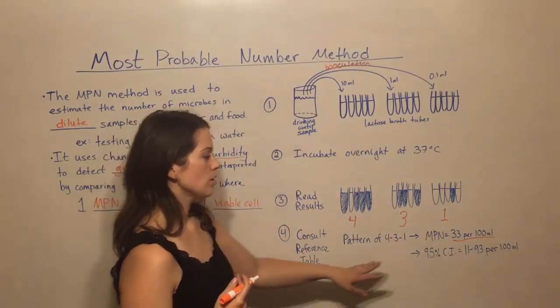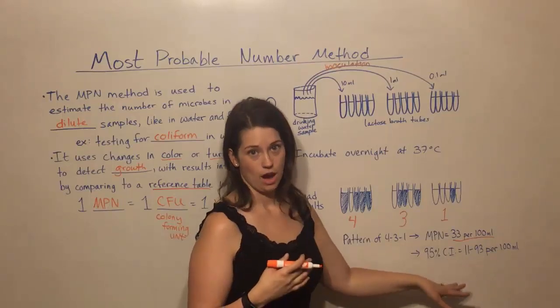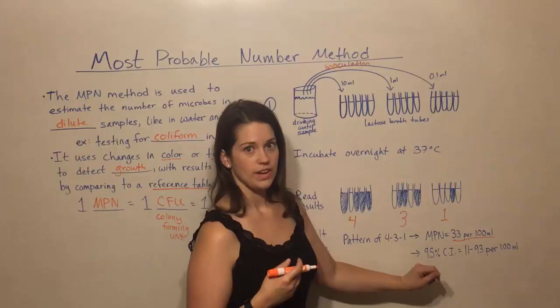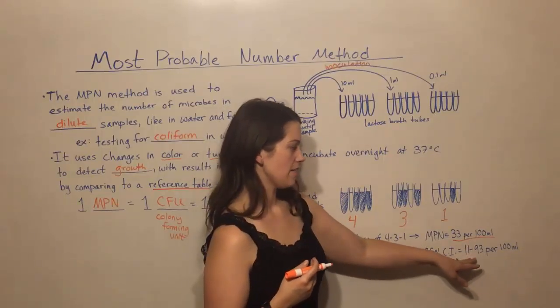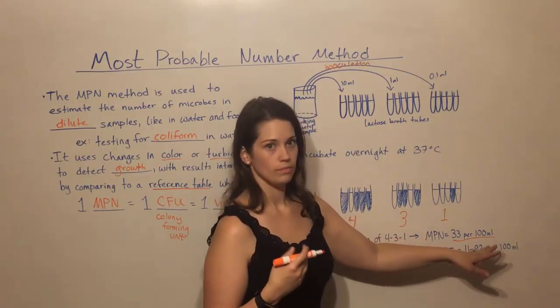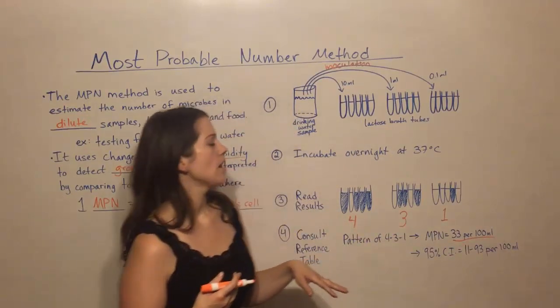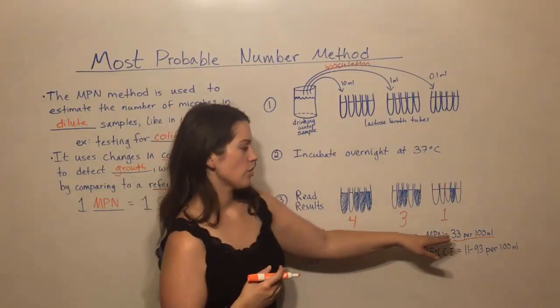The table also gives us a confidence, a 95% confidence range. And for the pattern 4-3-1, the 95% confidence range is 11 to 93. So the most probable number is 11 to 93 per 100 milliliters.